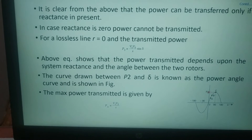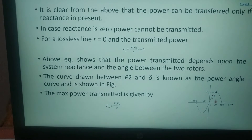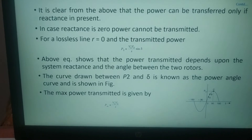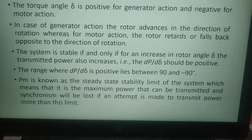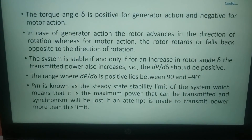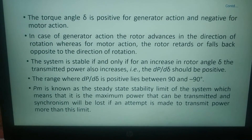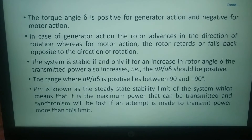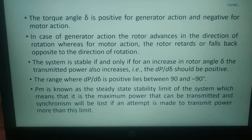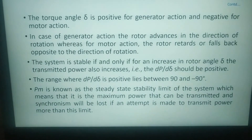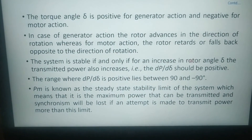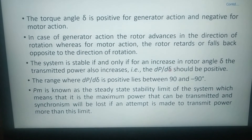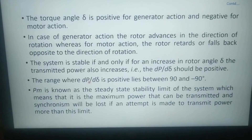This is the power angle curve. The maximum power transfer Pm occurs when delta equals 90 degrees and equals Pm equals V1*V2 upon X. The power angle delta is positive for generator action and negative for motor action. For generator action the rotor advances in the direction of rotation, whereas for motor action the rotor retards or falls back opposite to the direction of rotation. The system is stable if and only if for an increase in rotor angle delta, the transmitted power also increases — that is, dP/d(delta) should be positive.